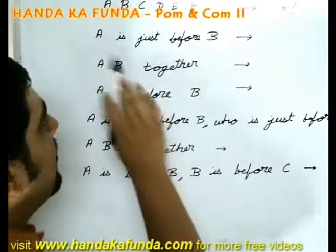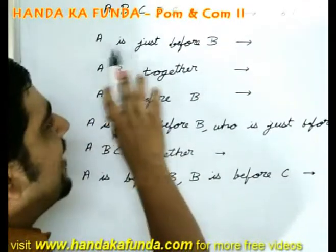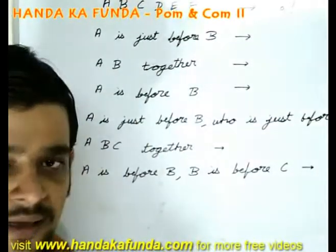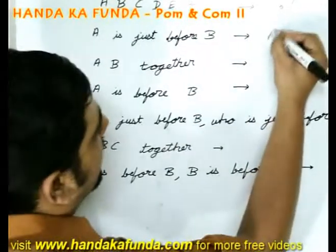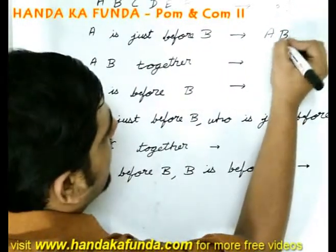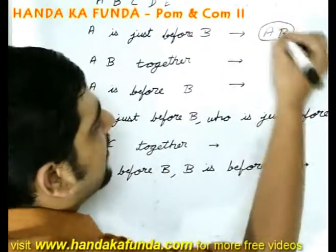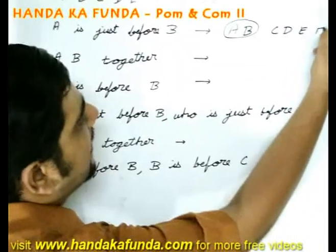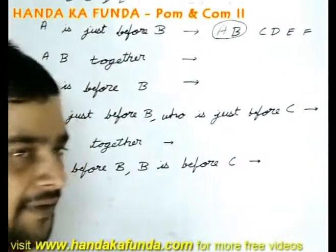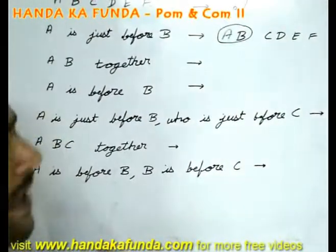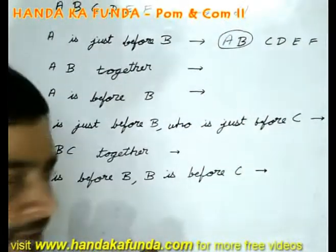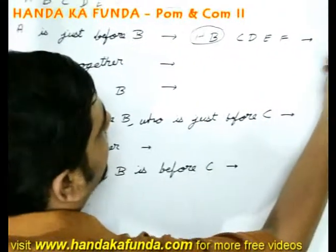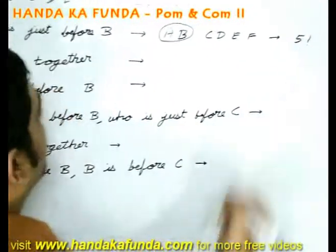In how many ways can they sit such that A is just before B? For that you will have to consider AB as one entity, and there will be 4 more entities C, D, E and F. In how many ways can you arrange 5 entities? You can do that in 5 factorial ways.